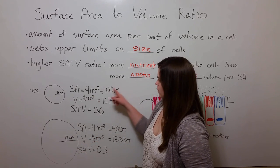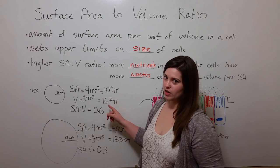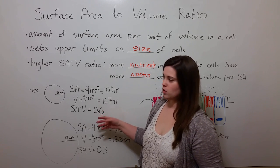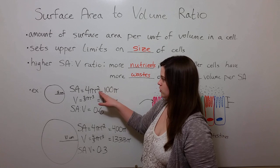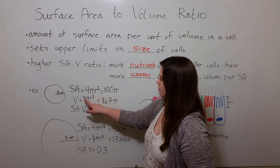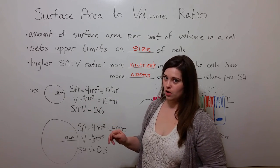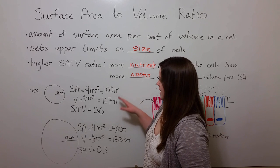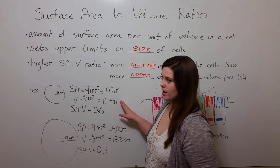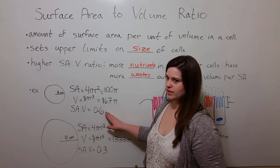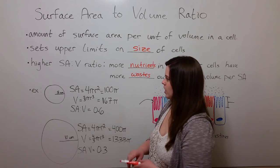If we calculate their surface area and their volume using the correct equations, that is, 4πr² for surface area and 4/3πr³ for volume, we then take the surface area divided by the volume to get the surface area to volume ratio.